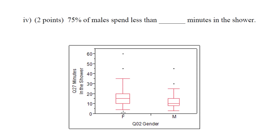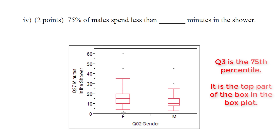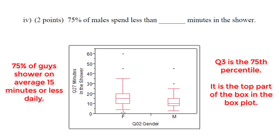The next question asks: 75 percent of males showered less than what amount of time? To find this, we need to find Q3, which is the 75th percentile for males. Q3 for males is right about at 15. As you can see, tracing the line over, around 15 minutes is the 75th percentile — so 75 percent of guys shower on average 15 minutes or less.